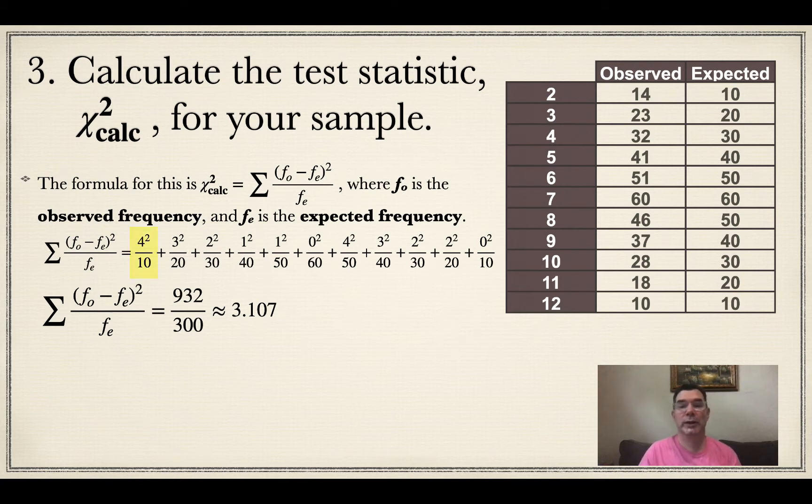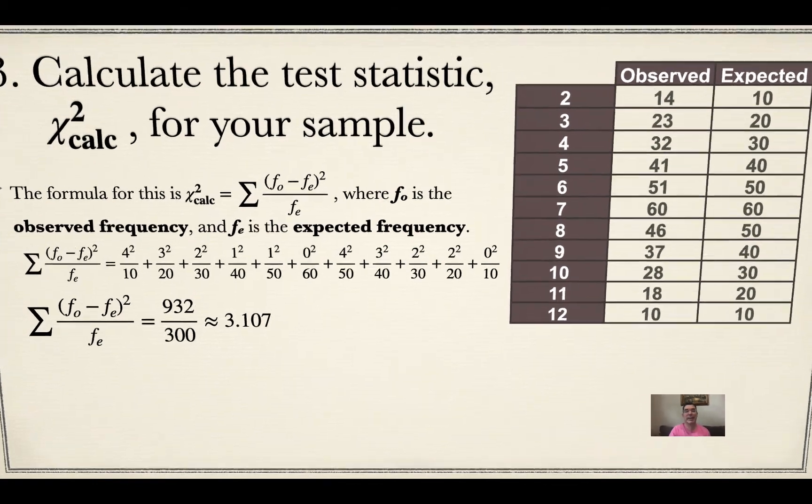For the second row, rolling a 3, the observed frequency was 23, and I only expected that to happen 20 times out of the 360. So the difference between those is 3. So my second fraction is 3 squared out of 20. And that's how every fraction was created. So if I add all of those fractions together, I get 932 out of 300, which is 3.107. That is my χ²calc.